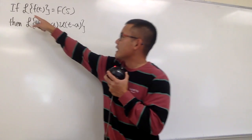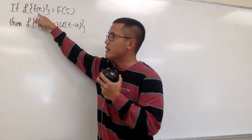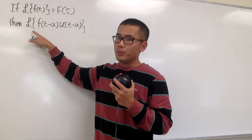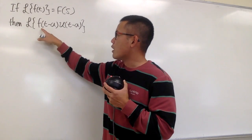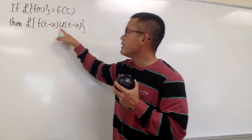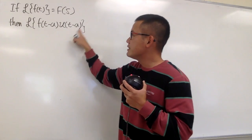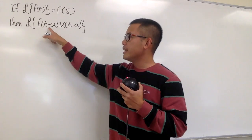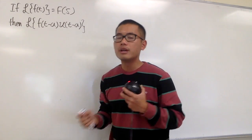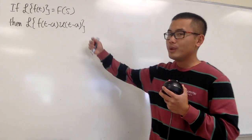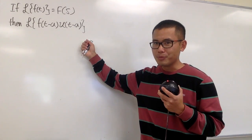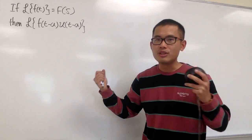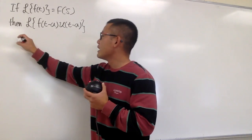Suppose we have the Laplace transform of f of t is equal to capital F of s. Can we find a formula for the Laplace transform of f of t minus a times u of t minus a? This is just the unit step function, and you see that the inputs right here, they match. We are trying to come up with a formula, so the best bet is to use the definition of Laplace.